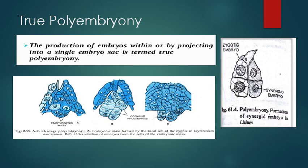True polyembryony — in which the production of embryos within or projecting into a single embryo sac — is termed true polyembryony. In most cases, synergids act to form the embryo with or without fertilization. The production of embryos from antipodal cells is rare. The embryonic mass is formed by the basal cell of the zygote in Erythronium americanum. In diagrams B and C, differentiation of embryos from cells of the embryonic mass and growing proembryos are shown.